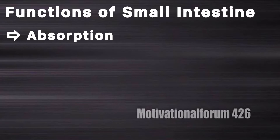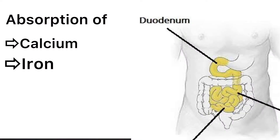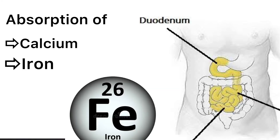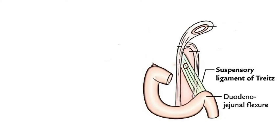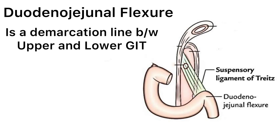The main function of the small intestine is the absorption of digestive material. In the duodenum, there is major absorption of calcium and iron. The next part is the jejunum, where most of the absorption takes place. The flexure between the duodenum and the jejunum is called the duodenojejunal flexure, which is the demarcation line between the upper GI and the lower GI tracts.